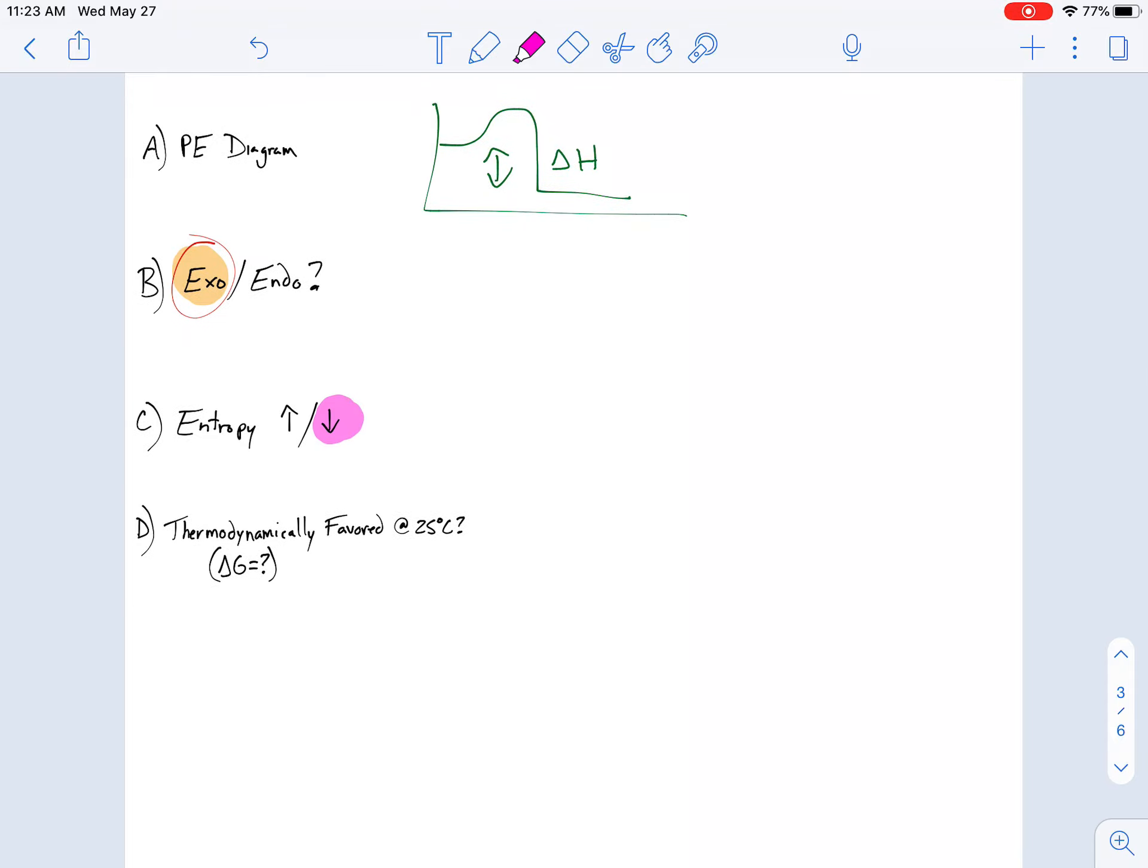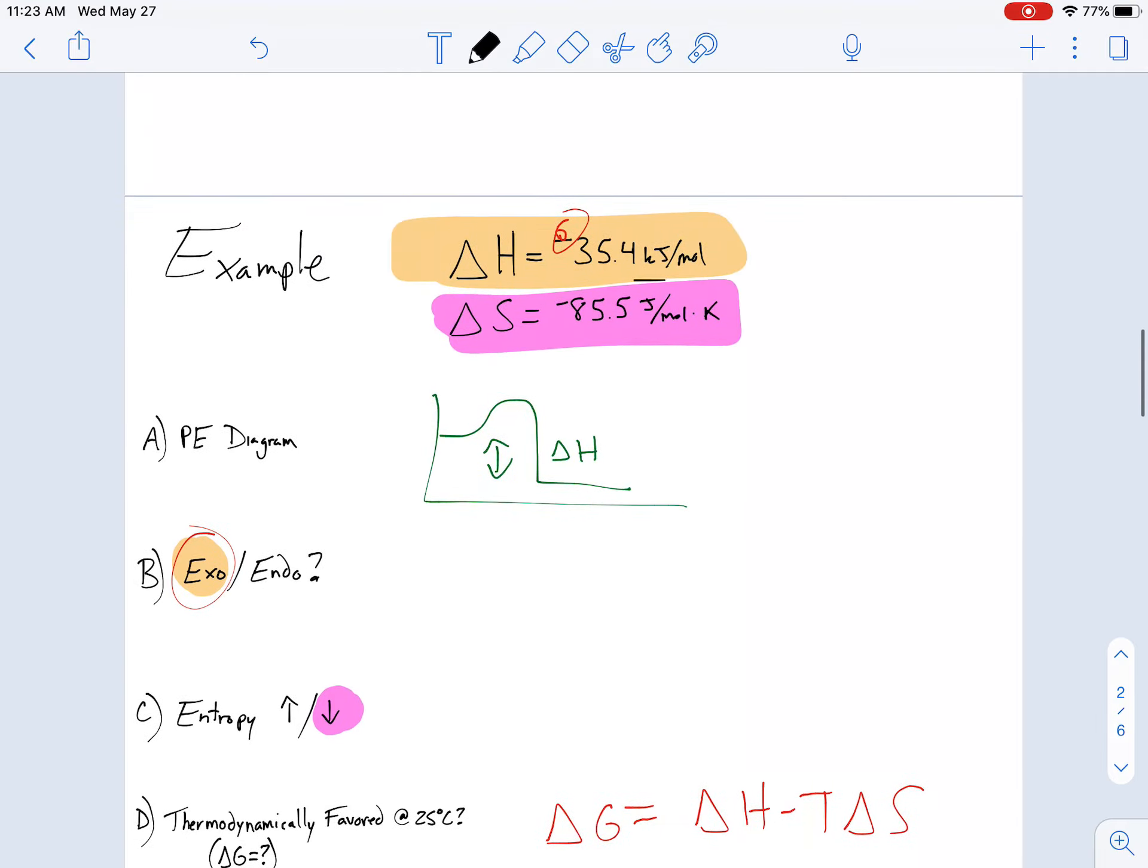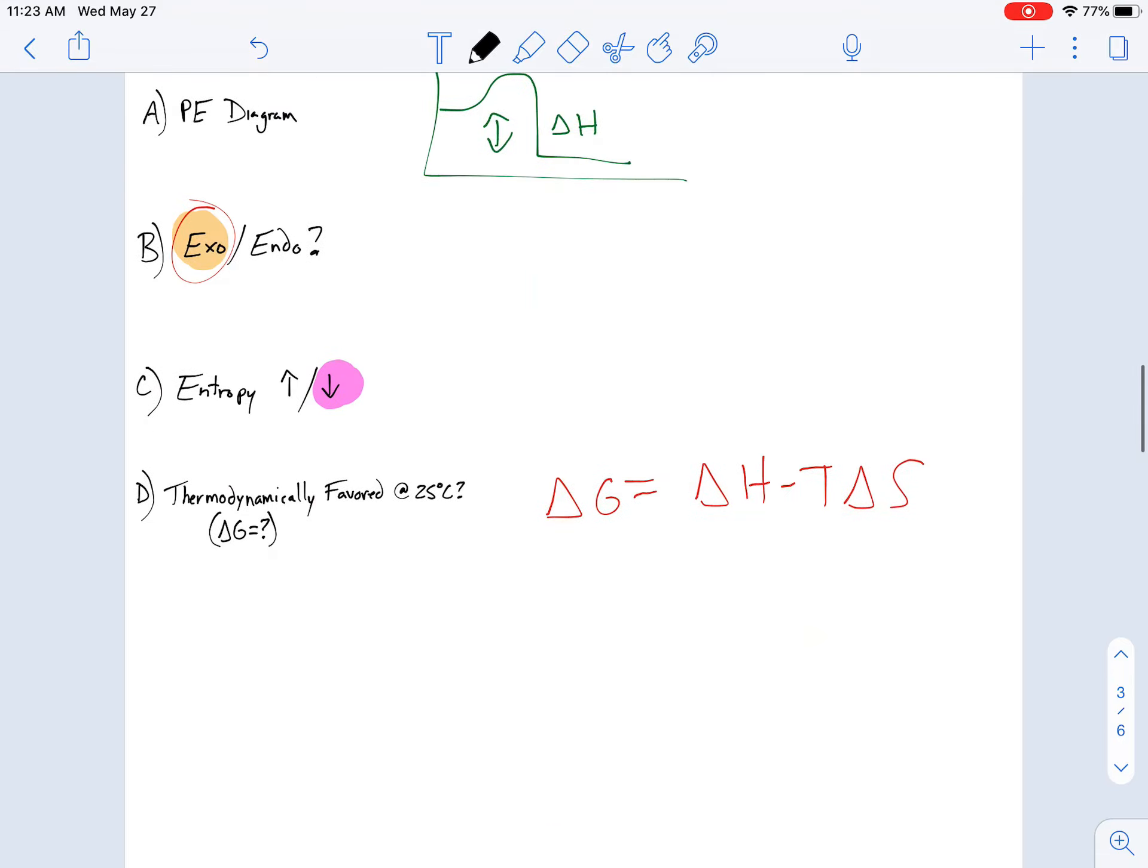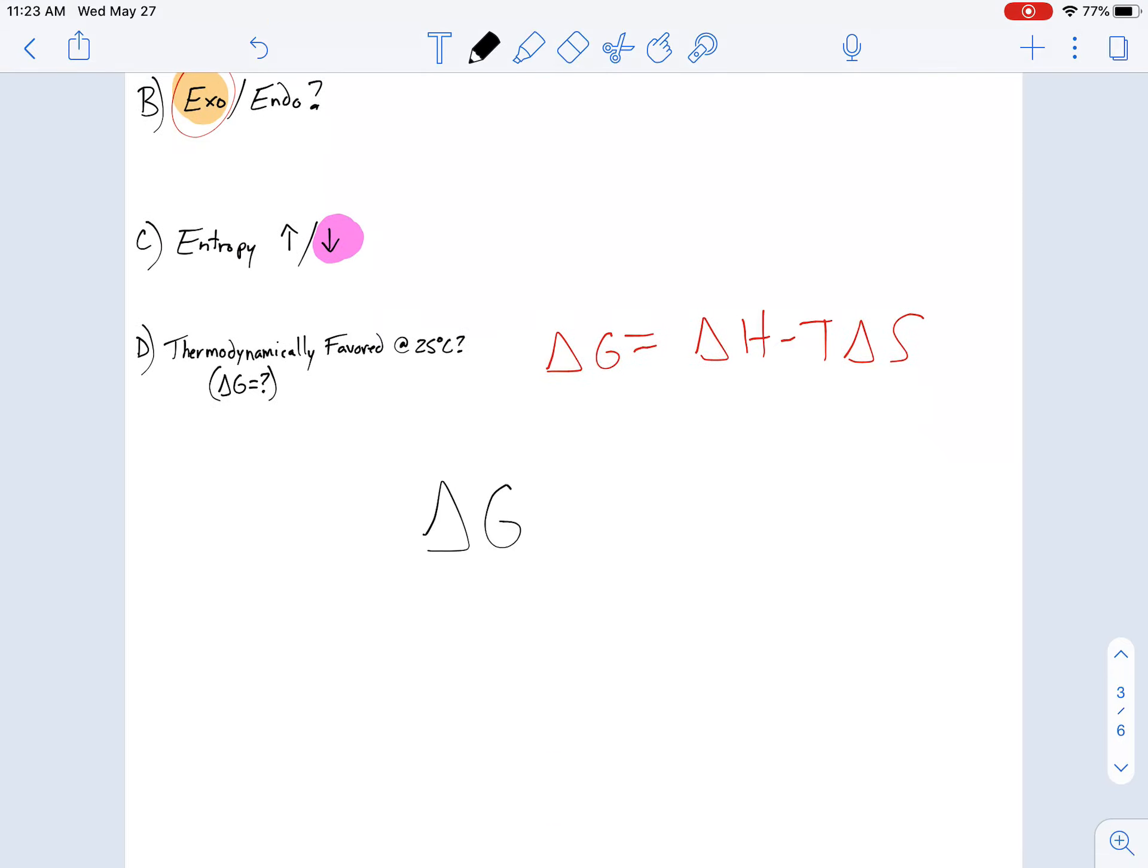And then it asks us the question, is this thermodynamically favored at 25 degrees Celsius? This is when I have to plug it into delta G equals delta H minus T delta S. When I plug all those values in, and realize that this is kilojoules and joules, so you're going to have to convert, delta G comes out to be negative 9921 joules per mole. Now, if it's negative, that means this is a spontaneous event. Or, yes, it is thermodynamically favored.